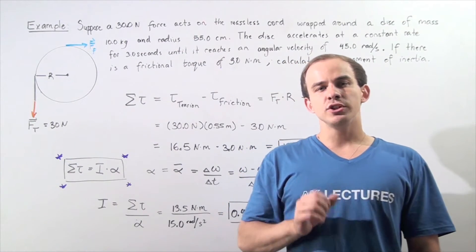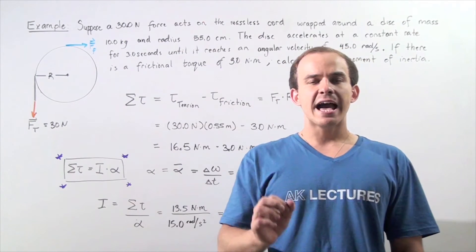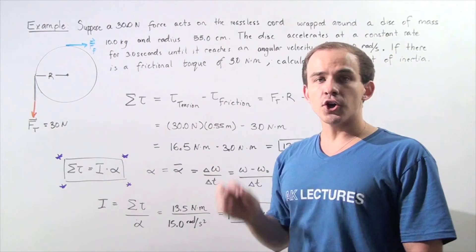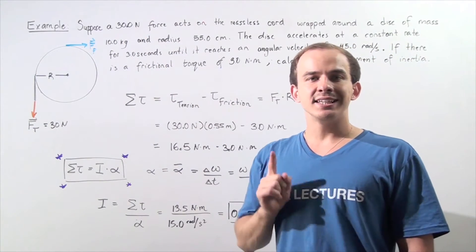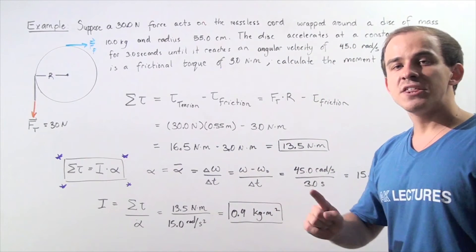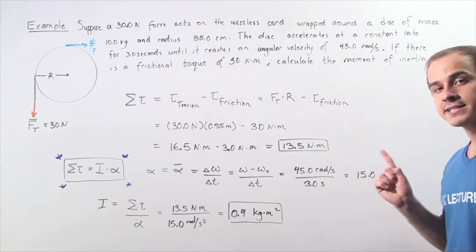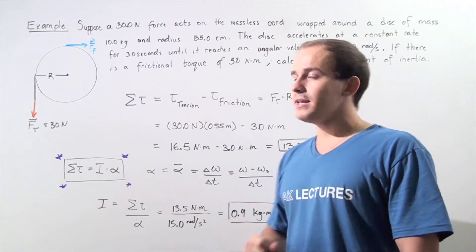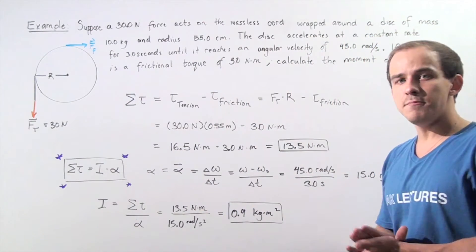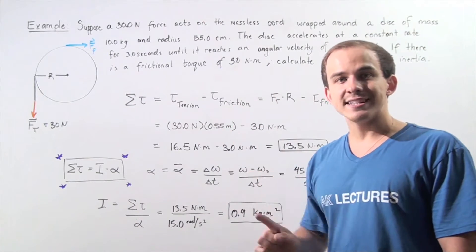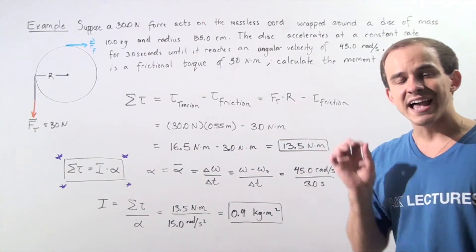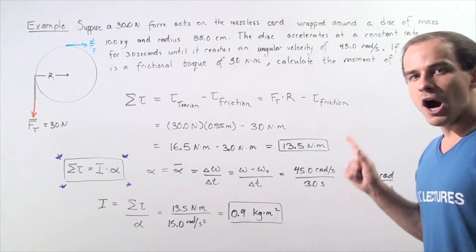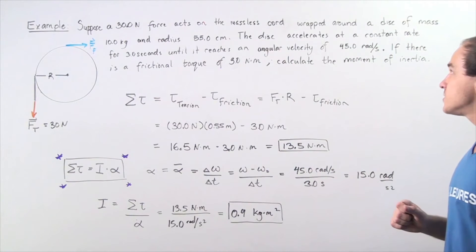This example deals with rotational dynamics of a rotating object. Suppose a 30 Newton force acts on a massless cord wrapped around a disc that has a mass of 10 kilograms and a radius of 55 centimeters. The disc accelerates at a constant rate for 3 seconds until it reaches an angular velocity of 45 radians per second.